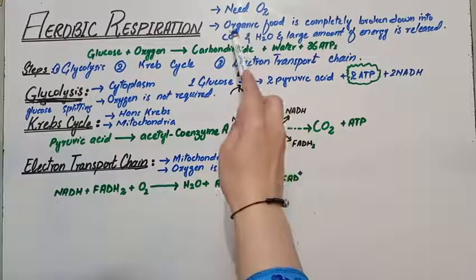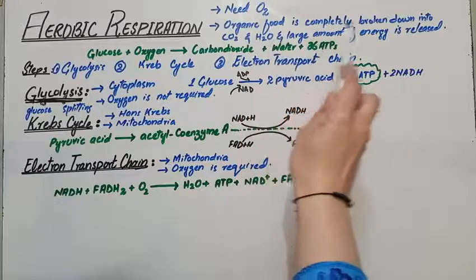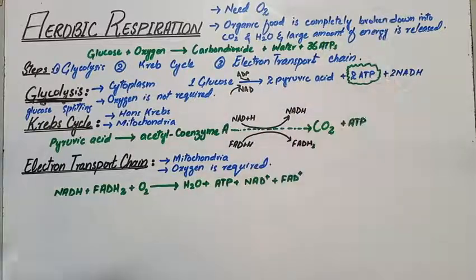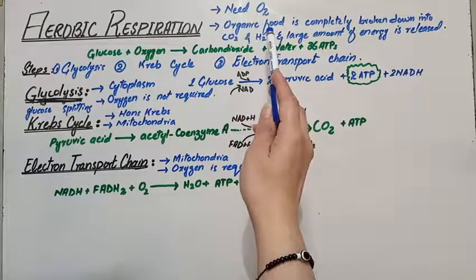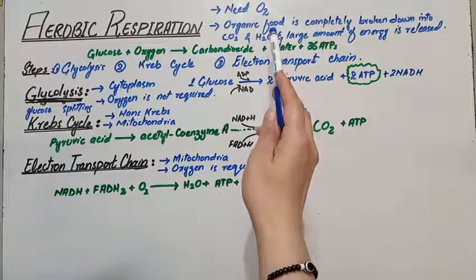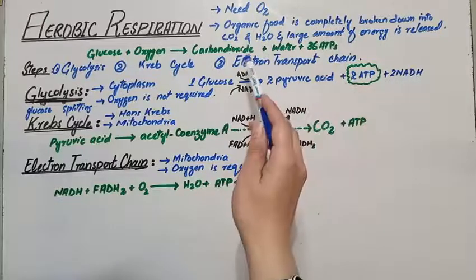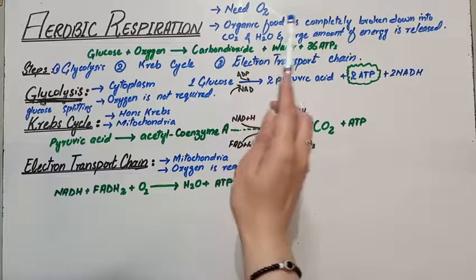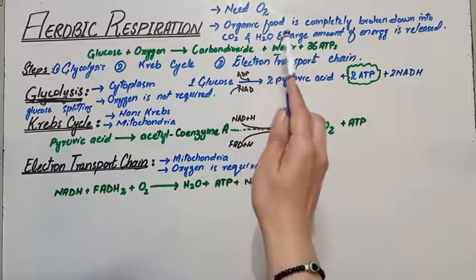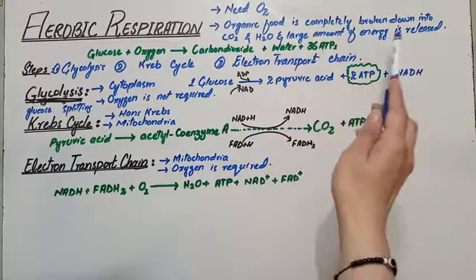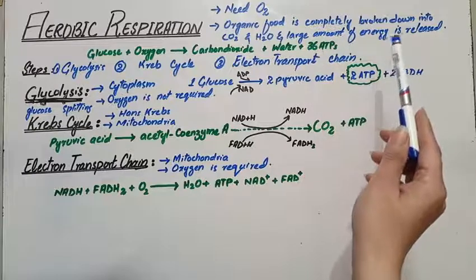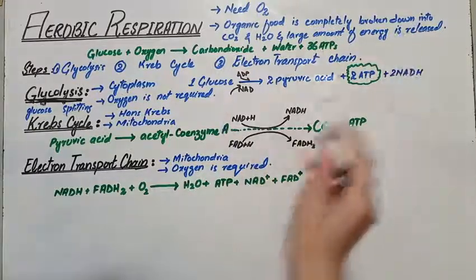In aerobic respiration, the organic food is completely broken down into carbon dioxide, water, and a large amount of energy is released. The organic food — that is glucose, proteins, and fats — when completely broken down, releases carbon dioxide gas and water, which is used in further reactions inside the body. The large amount of energy released is in the form of ATPs, which cells use to perform vital activities of life.